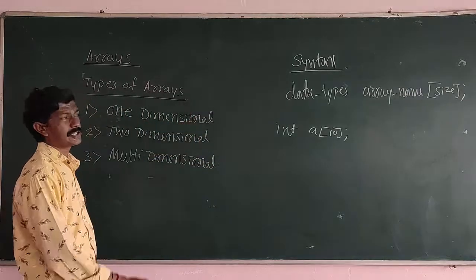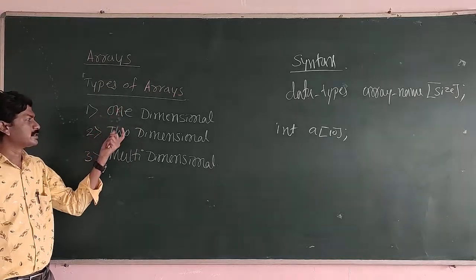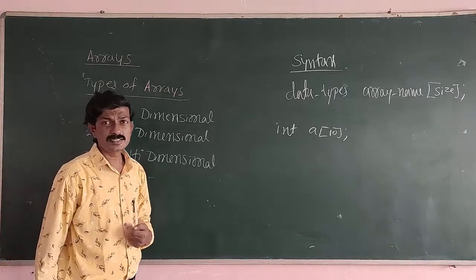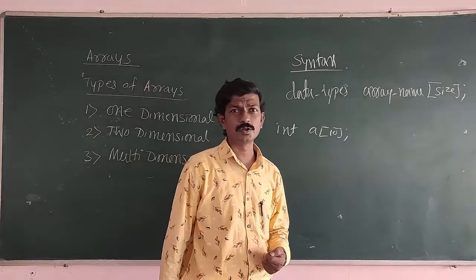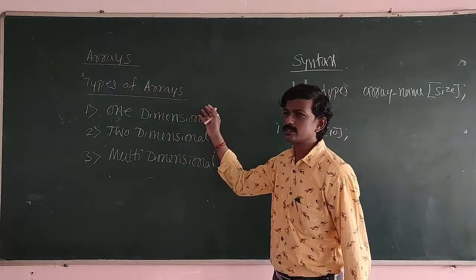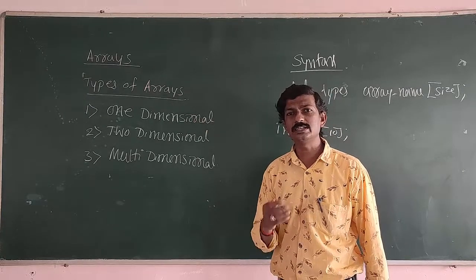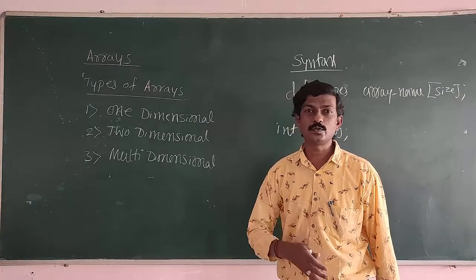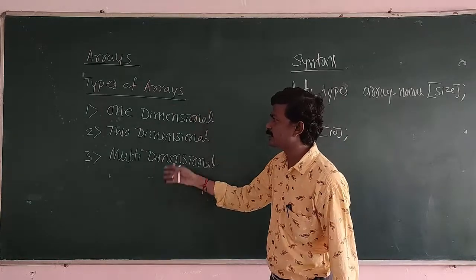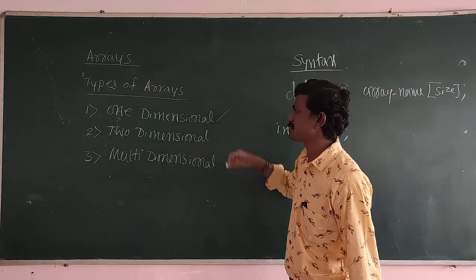Now, Arrays are classified into three different types. Those are one-dimensional Array, two-dimensional Array, and multidimensional Array. These Arrays are classified based on the subscript of that Array — meaning how many elements we are allowed to store in a row or column. Based on that, they are classified into three different types.